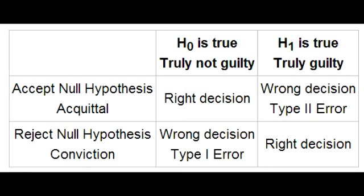The null hypothesis (H0) is the hypothesis of no difference — no association between disease and risk factor in the population. The alternative hypothesis (H1) is the hypothesis of some difference — there is some association between disease and risk factor in the population.